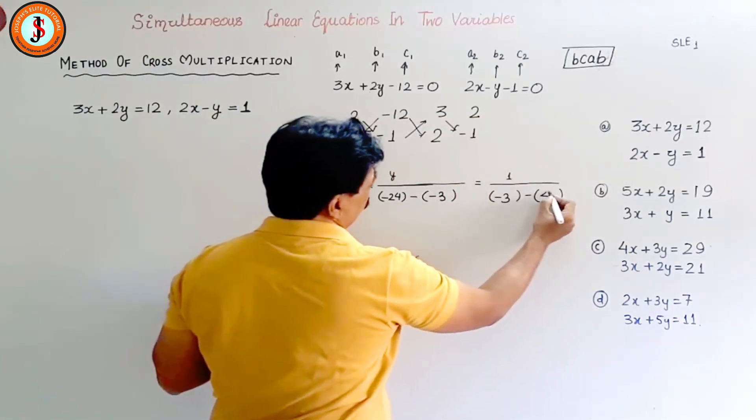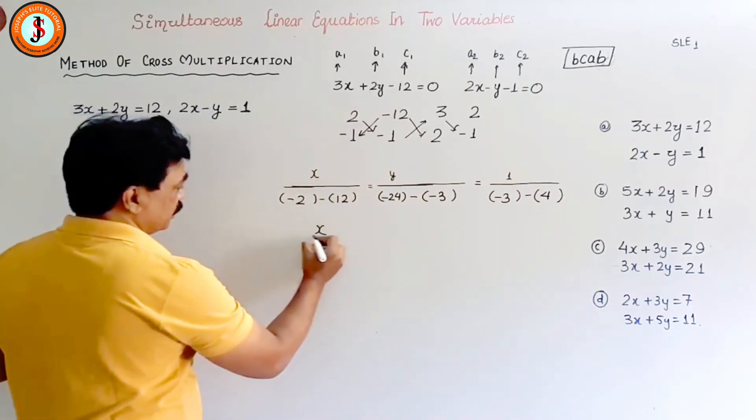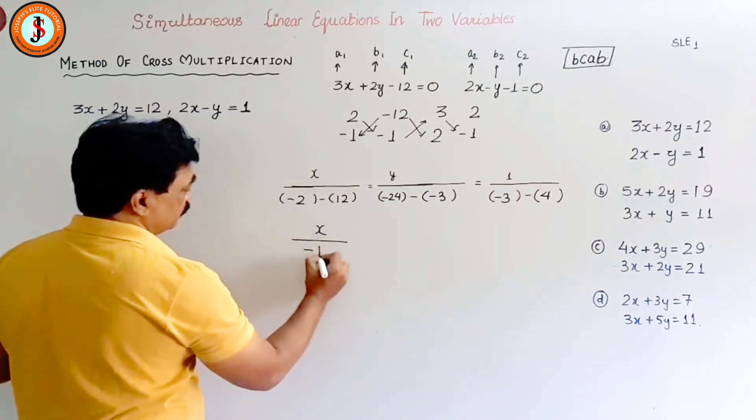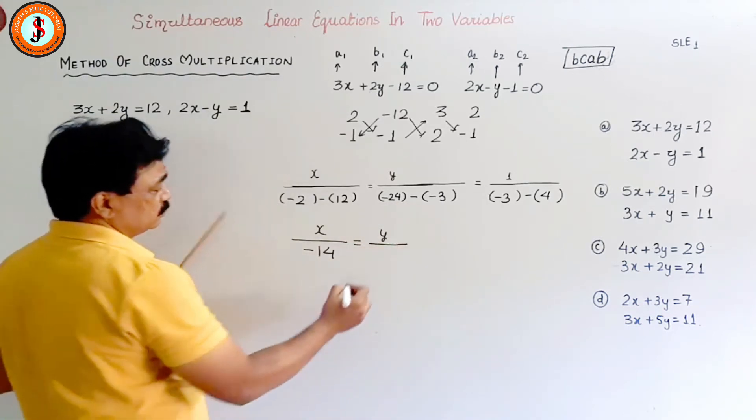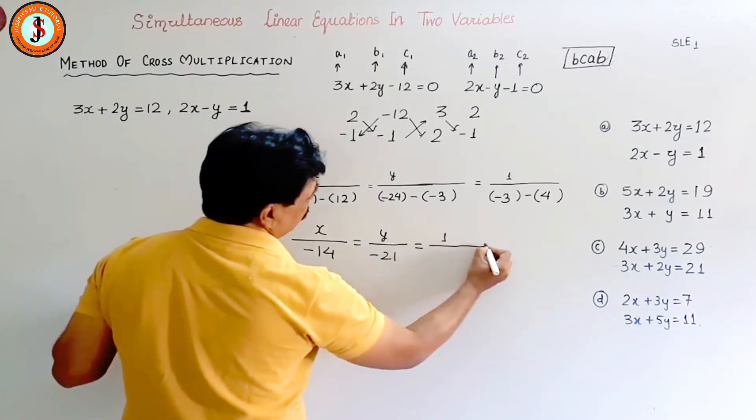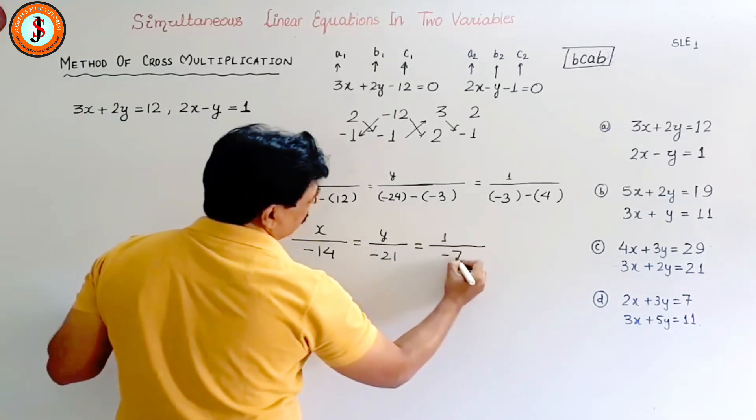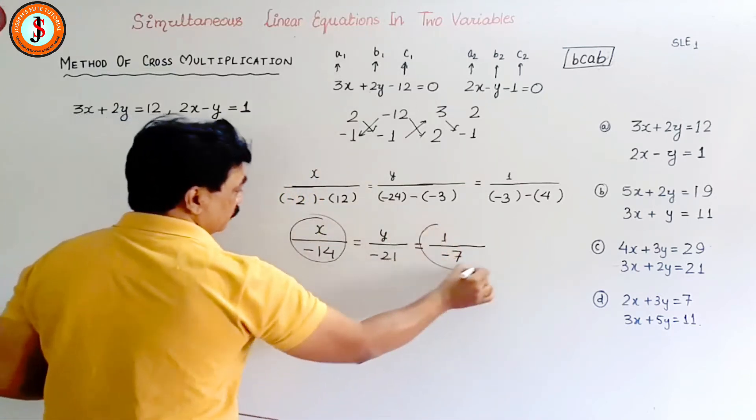Now we solve this. x minus 12, and so this is minus 14. y will be minus 24 and plus 3 is minus 21, and here it will be minus 7. Now suppose I have to get x, so x and the constant comes, so here it will be x.